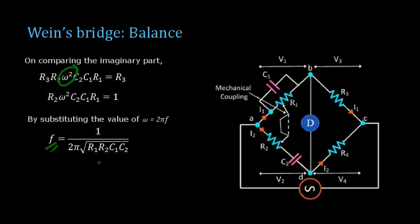If you can make R1 equal to R2 and C1 equal to C2, which is the case in most of the Wein's circuits, you can get the equation as f equal to 1 by 2π RC. That is again explained in one of the future slides.